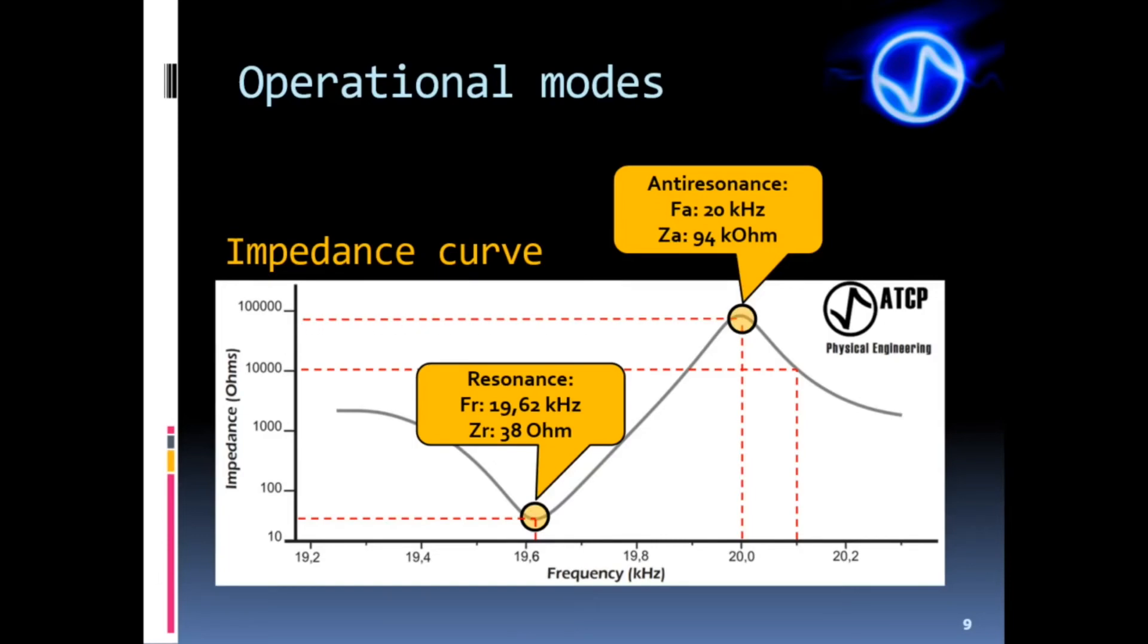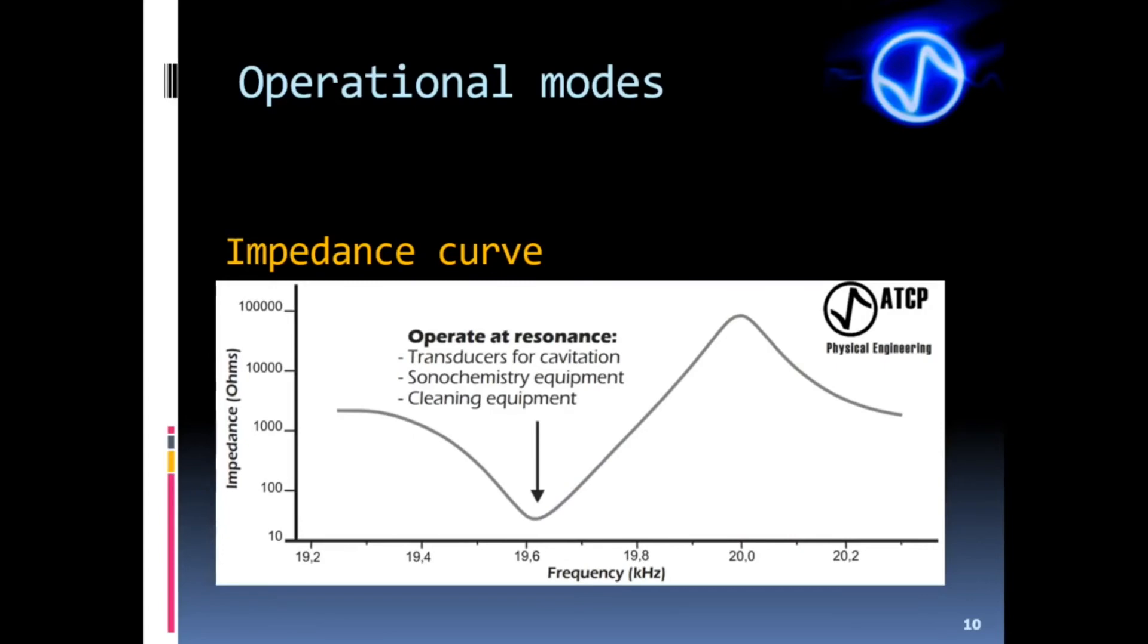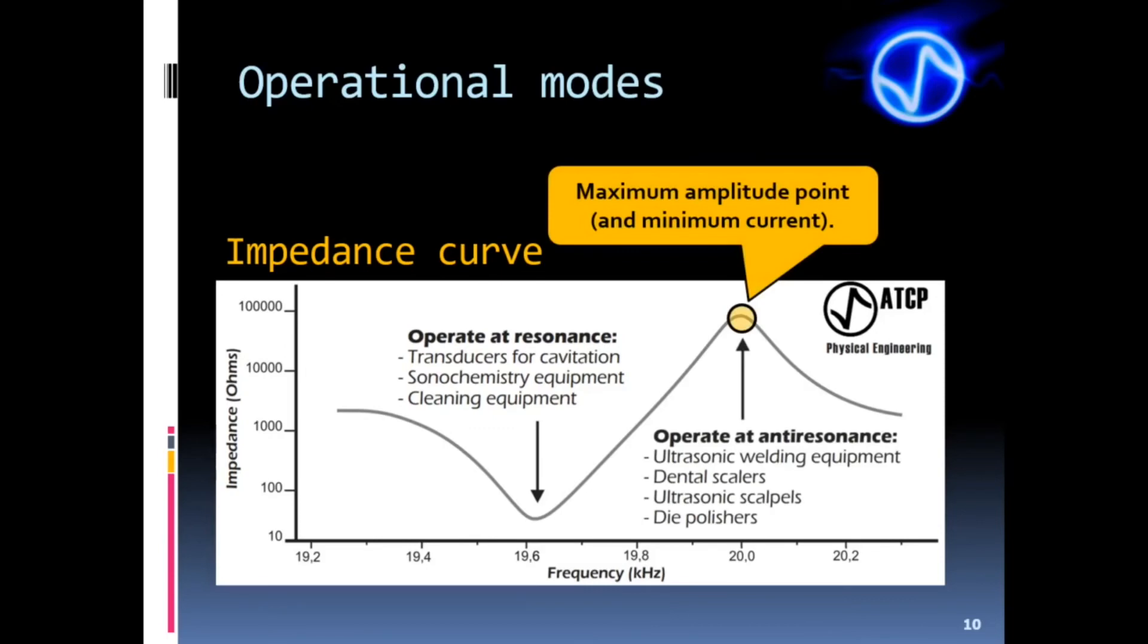There are mainly two types of ultrasonic systems: those that operate at resonance and those that operate at anti-resonance. Equipment that operates at resonance normally requires a very large amount of force. The electrical current is maximum and electrical impedance is minimal.